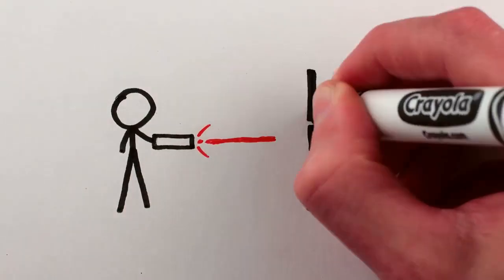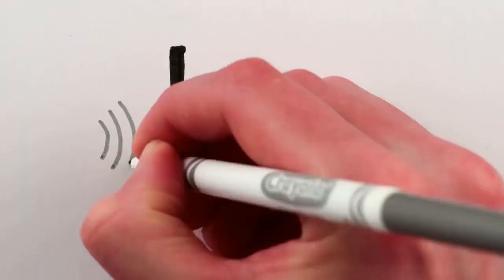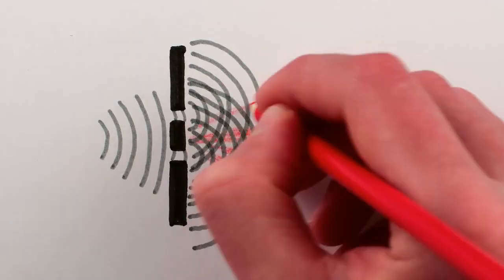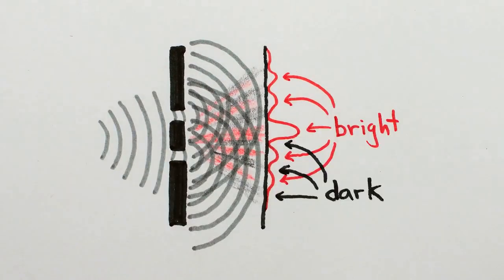If you take a laser and shine it at a wall with two holes in it, you have the famous double slit experiment, where waves coming through two slits interfere with each other to be bright in some places on the wall and dark in others. And this works with quantum particles too, since they behave in wave-like ways.